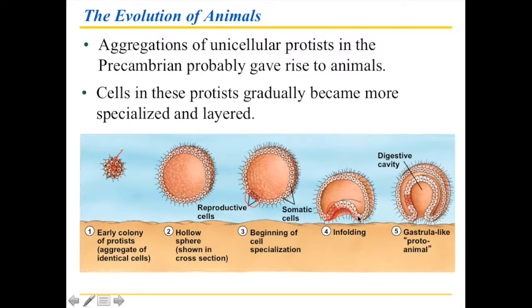If you bring this to its conclusion, you end up with a dual-layered system — an internal layer of cells and an external layer of cells. You have exposure to the outside and exposure on the inside, and this is where you can put the food. It says here it's a gastrula-like proto-animal. The gastrula is what happens in our cells as we develop. Development tends to go through all the evolutionary steps of a type of organism. In our case, we start out with a single cell, then a cluster of cells, then form a hollow sphere, and go through all these steps.